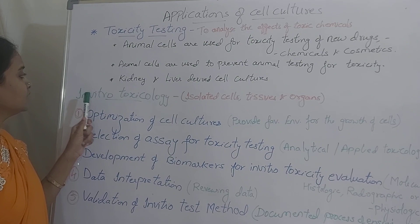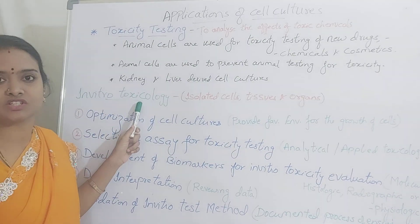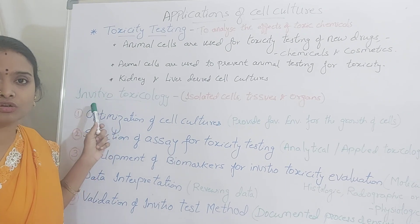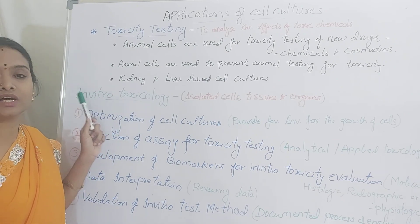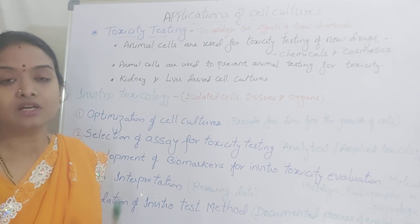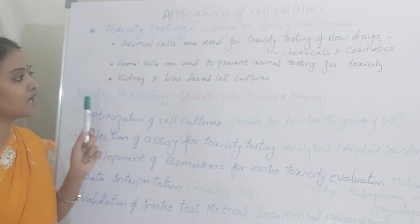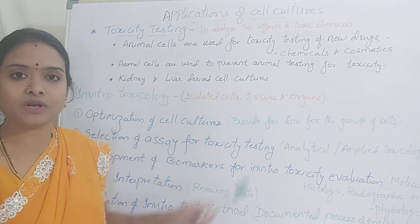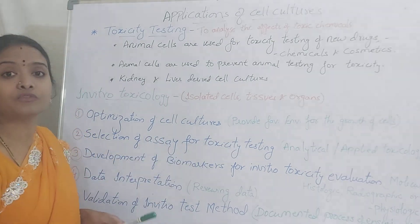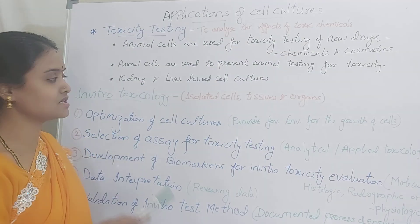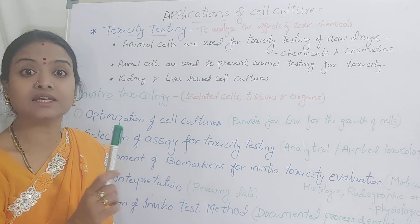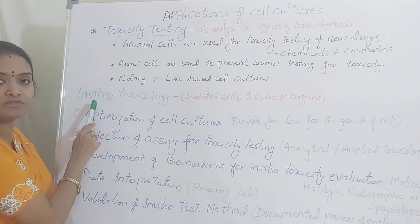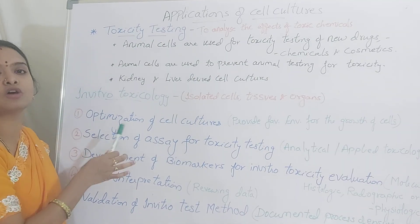This is called in vitro toxicology. In vitro, as you know, means outside the body. We are not testing on the animal directly. We are indirectly isolating the animal cells, tissues, or organs from the animals and then testing those cultured cells in the lab. That is called in vitro — in the lab, or outside the body.